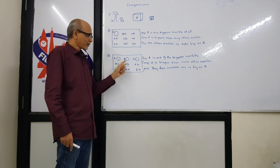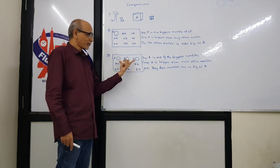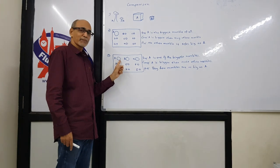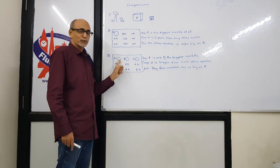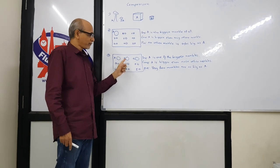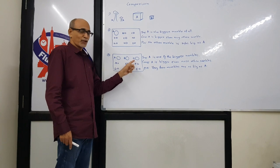Because A, B, and C are similar to each other, I cannot say A is the biggest marble of all, because that sentence will be wrong when we see B and C.